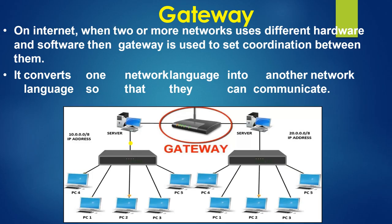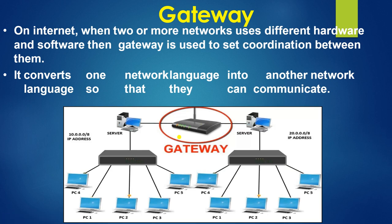Next is your gateway. A gateway connects two or more networks that use different hardware and software; we use the gateway to make coordination between them. It converts one network language into another network language so that they can communicate. This is a server of a different network and you have put a gateway here, and with this gateway all the computers are connected and interconnected to each other, each having a different IP address.